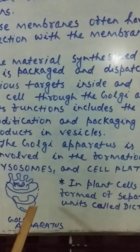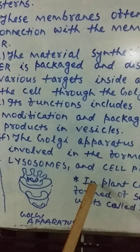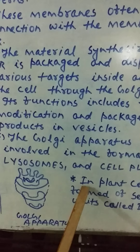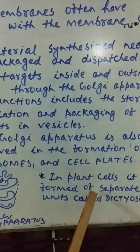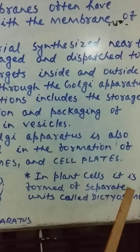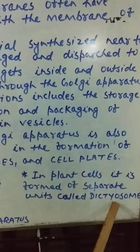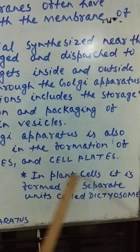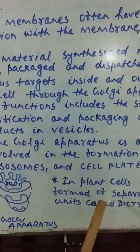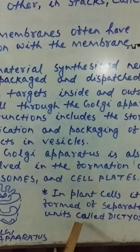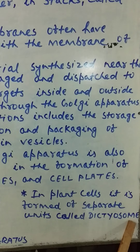Here is the diagram of the Golgi apparatus. In plant cells, the Golgi apparatus is in the form of separate units called dictyosomes.